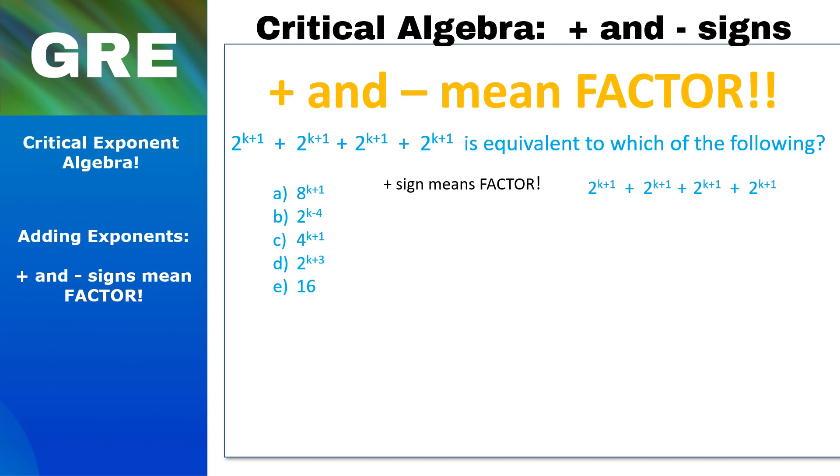We have 2^(k+1) by every single plus sign, so we'll factor that out and then we'll put what's left over inside the parentheses. Now we know we've done it right if we can multiply that 2^(k+1) back through the parentheses and get back to our original statement, and we can. So that's perfect.